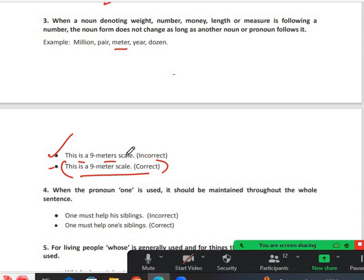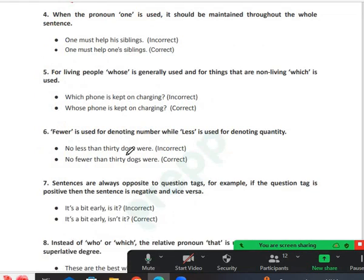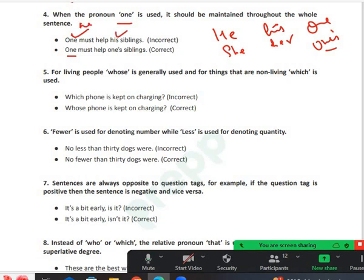The fourth point says when the pronoun 'one' is used, it should be maintained throughout the whole sentence. For example, one must help his siblings - his is incorrect. One must help one's siblings is the correct answer. You have to be very vigilant regarding these types of statements. Clear? Yes sir.